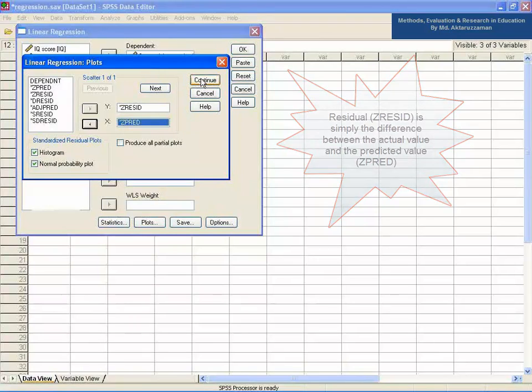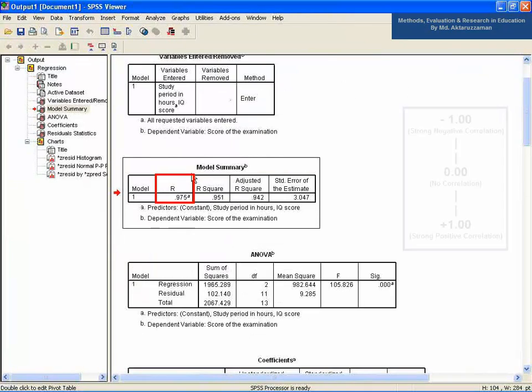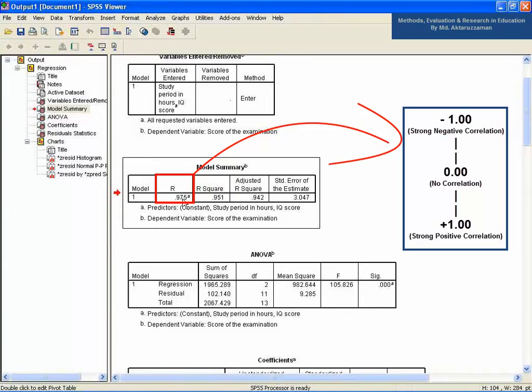See the output at the screen. The R value 0.975 indicates that a positive and strong relationship exists between IQ score, hard work in terms of study period in hours, and achievement of the student.